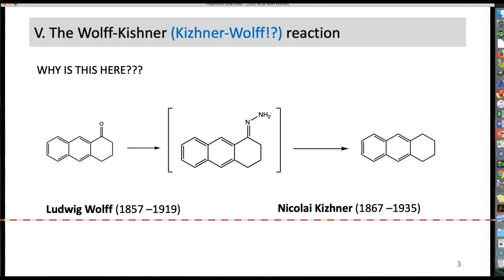Now, it's an interesting bit of chemistry history. Ludwig Wolff was in the late 1800s, died in 1919, and Nikolai Kishner, same general era. Turns out Ludwig was German and Nikolai was Russian, and it was Nikolai who discovered this reduction. He discovered how to make alkanes from carbonyls. He published the work in 1911, but he published in Russian, and it was pretty much not read by anyone because it was in Russian.